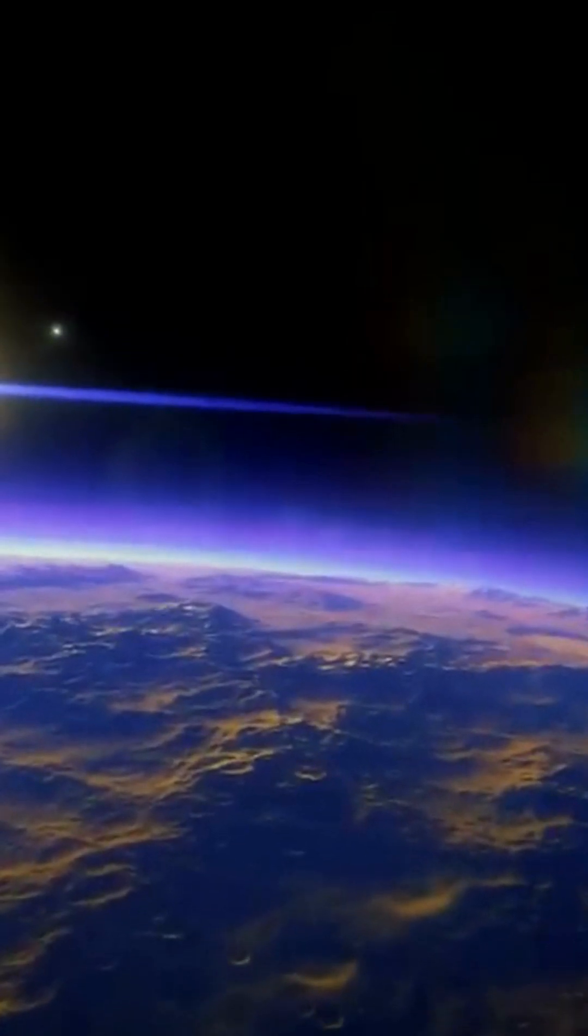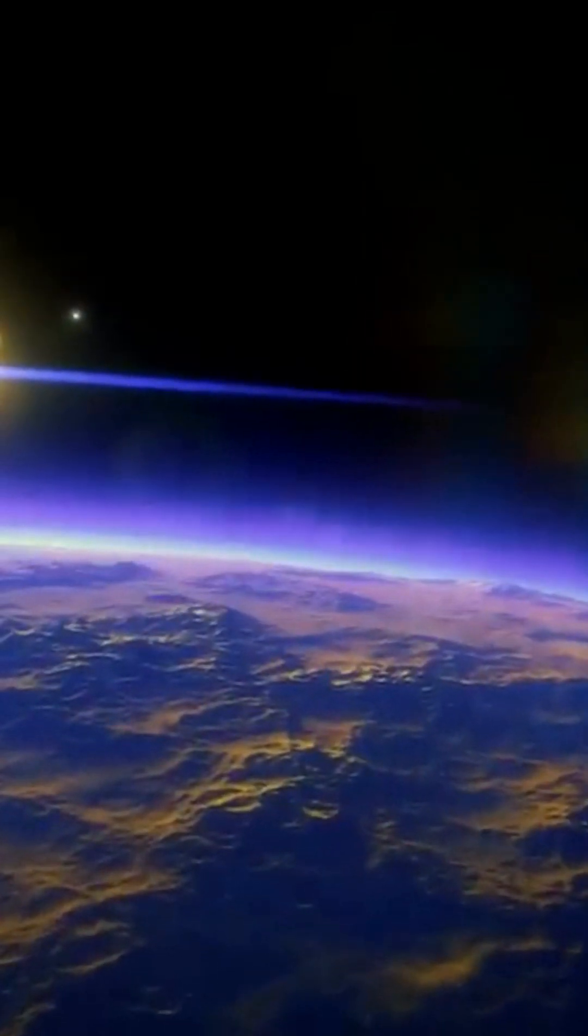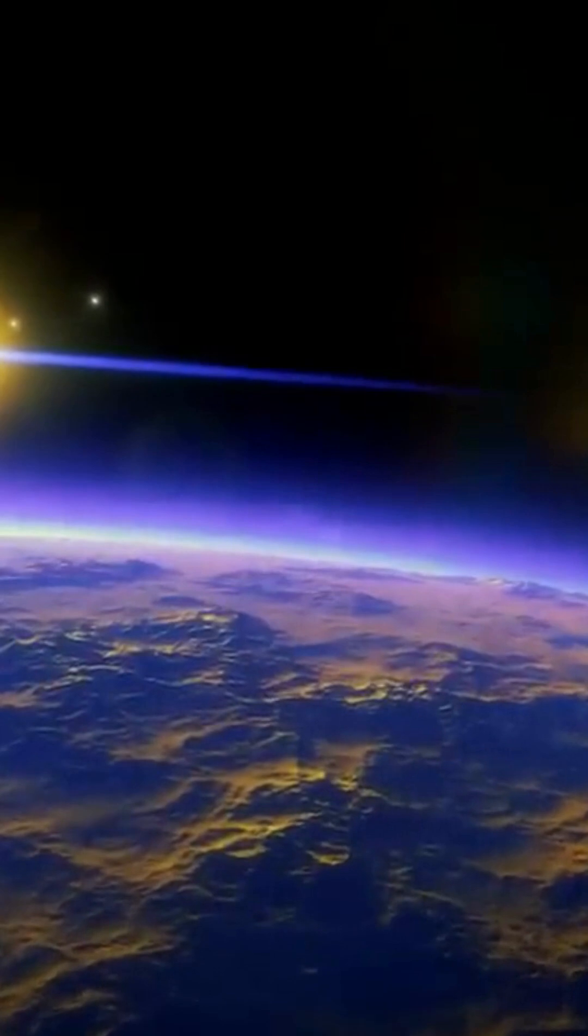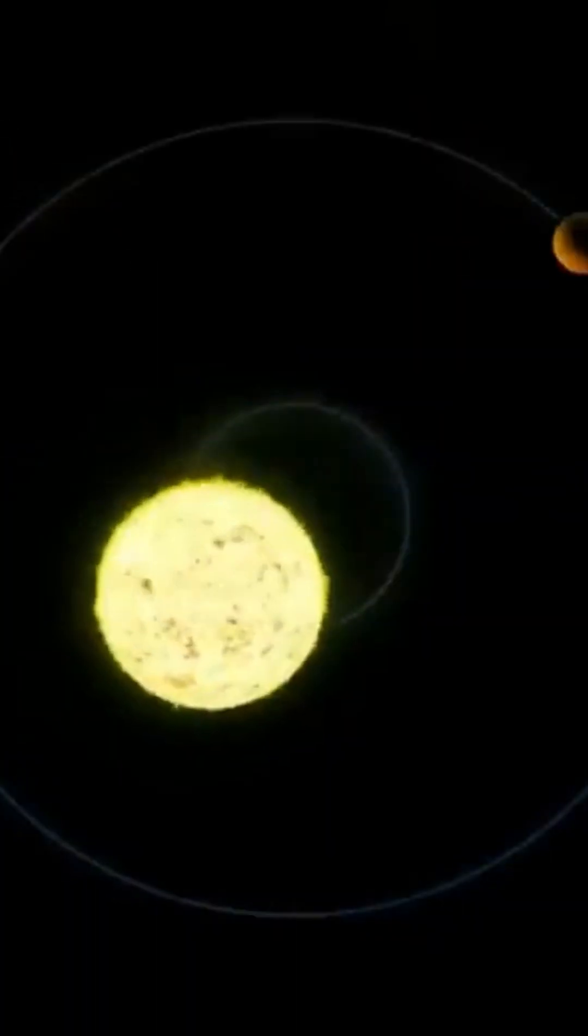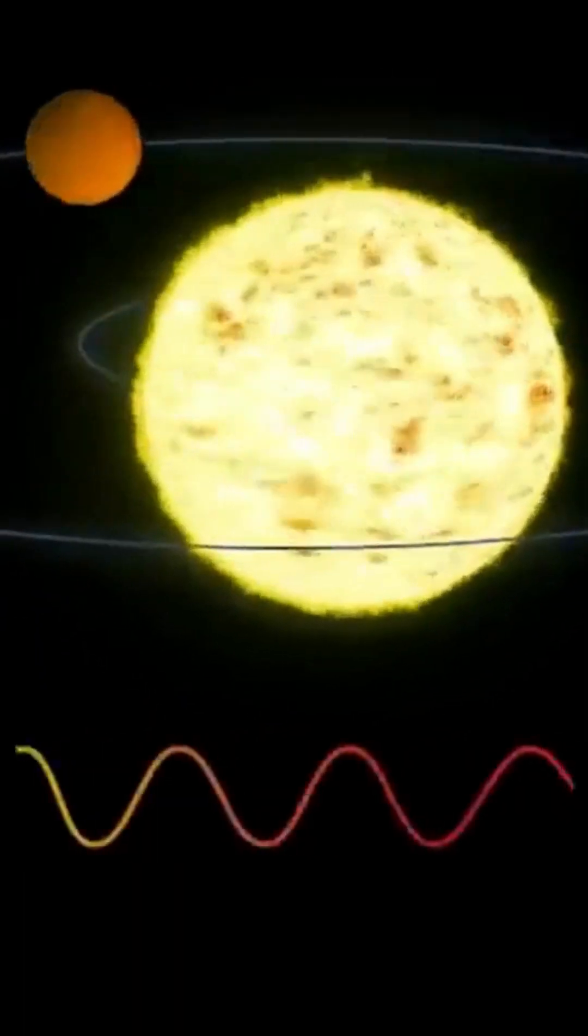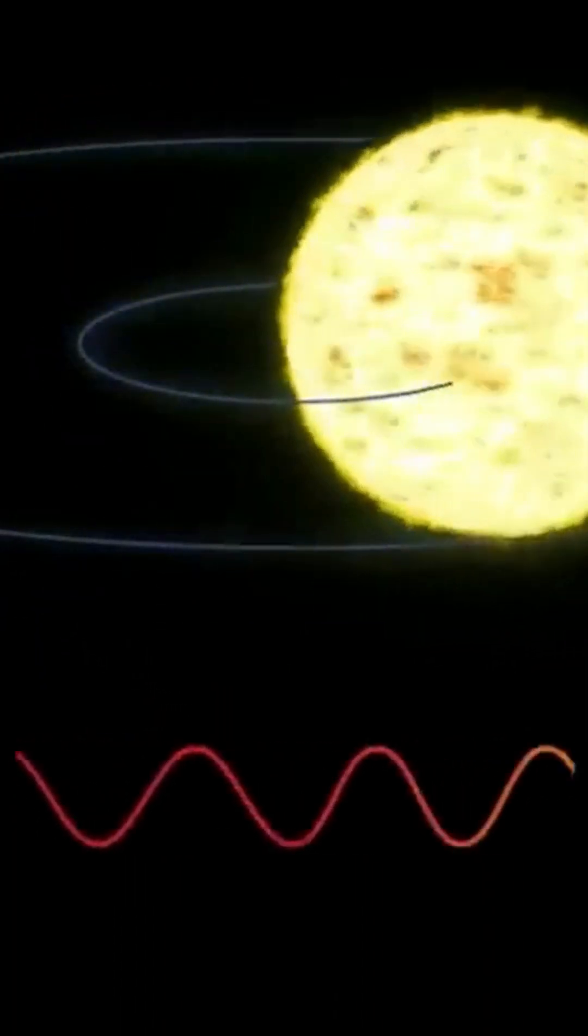These planets are probably telluric, that is, they would be composed mainly of rocks and metal, like the Earth. Their existence has been confirmed by the radial velocity method of the HARP spectrograph.